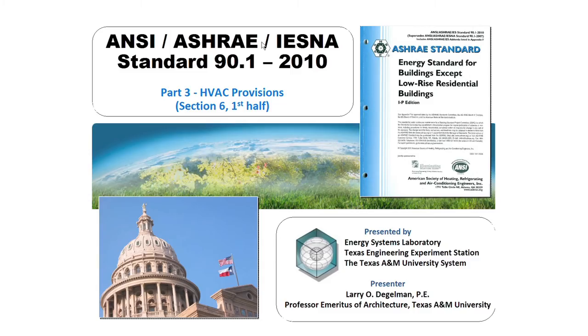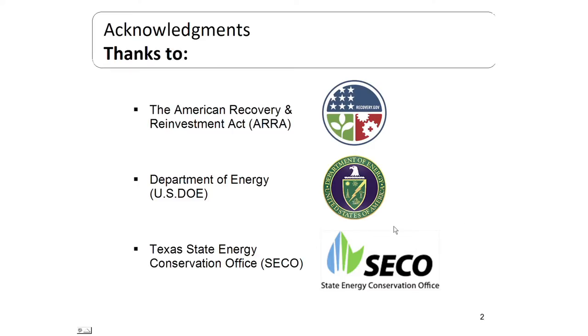Welcome to part three of the ASHRAE Standard 90.1 presentation. This particular one is on section six of the standard, which relates to HVAC provisions. We're only showing one half of it initially because this section is rather long, so we're trying to cut it down into a couple portions. We want to acknowledge support for this series: the AARRA, the USDOE, and of course the State of Texas SECO office.